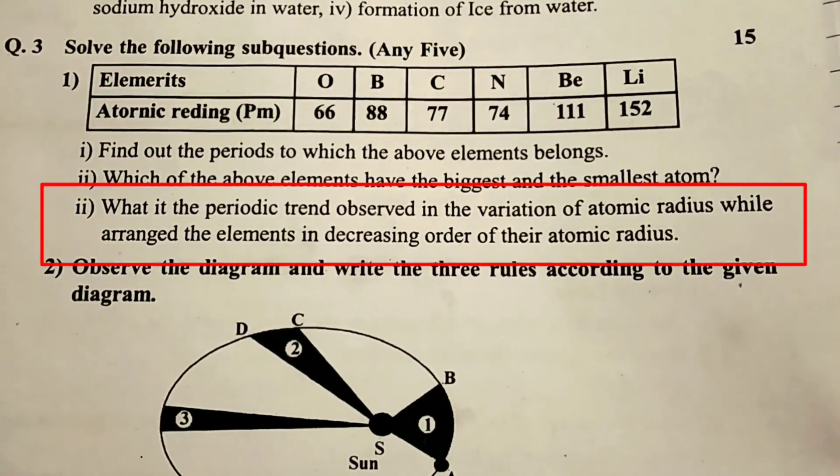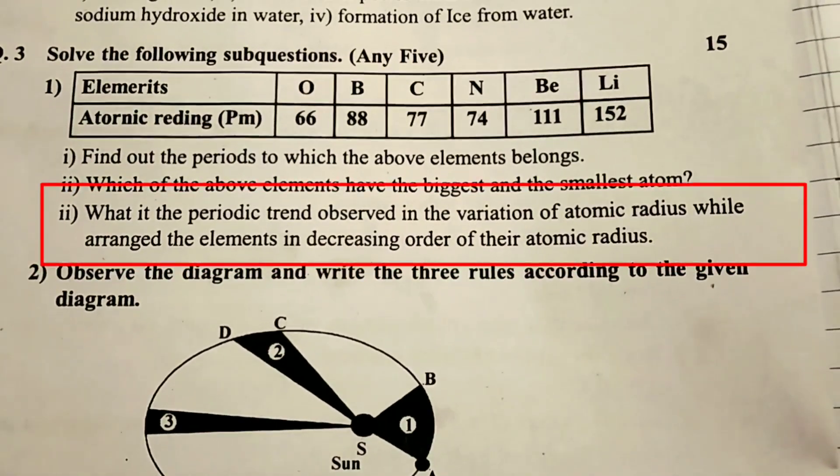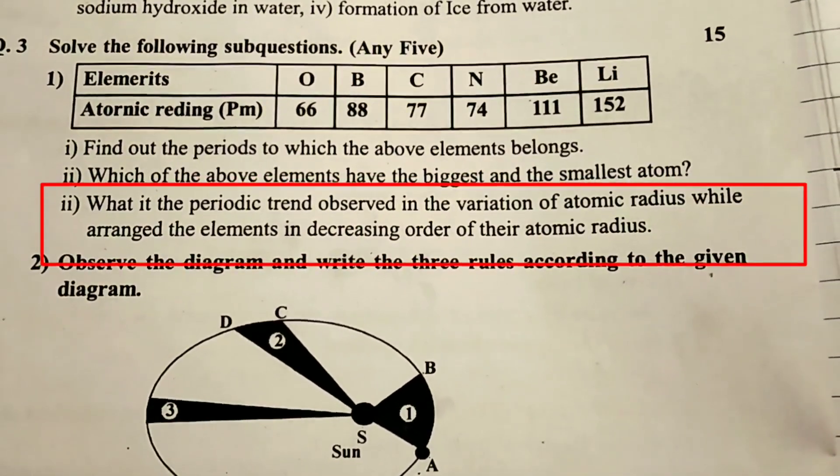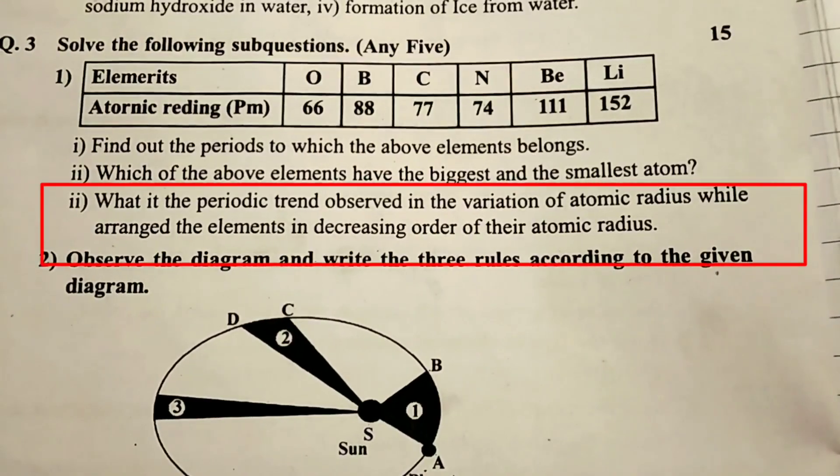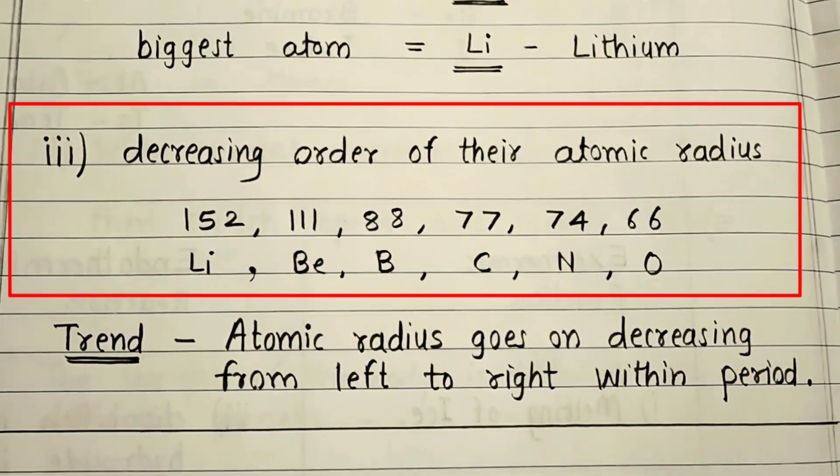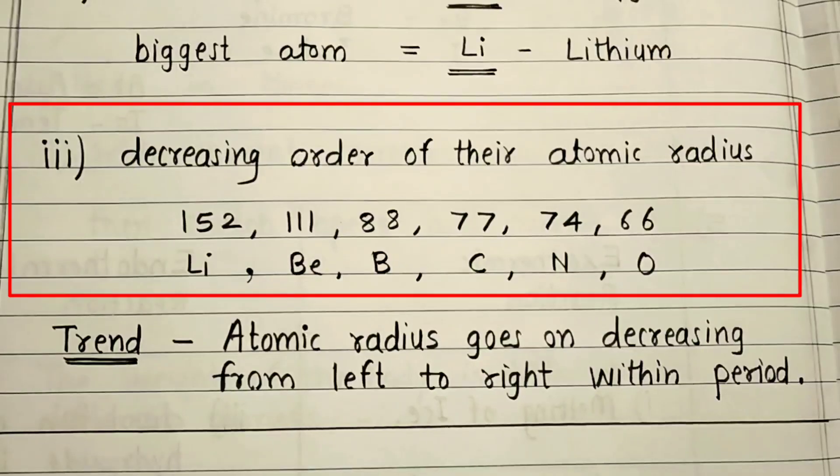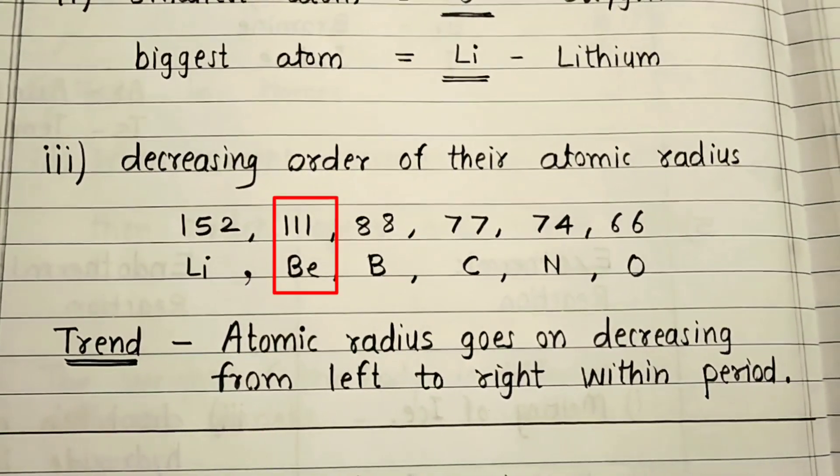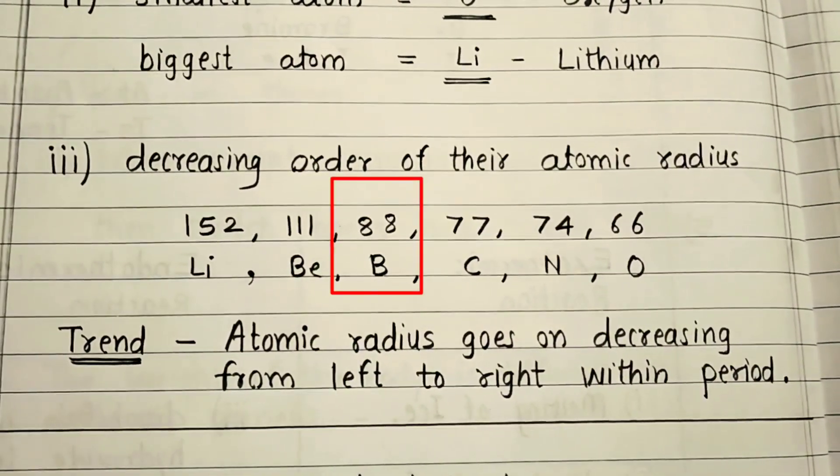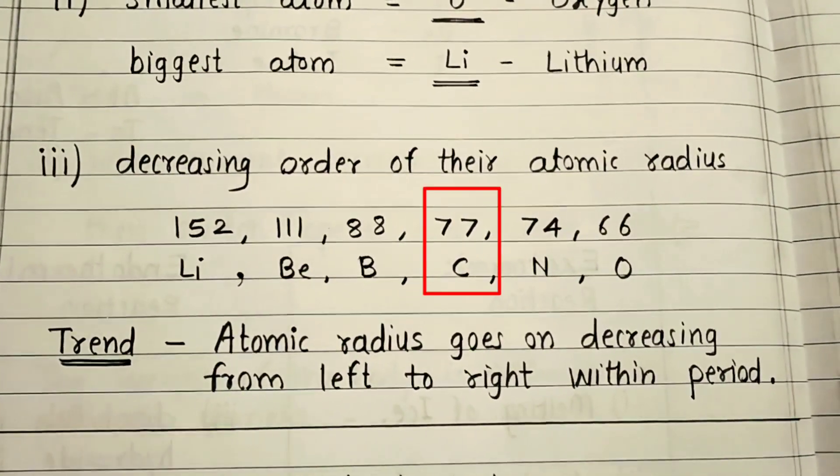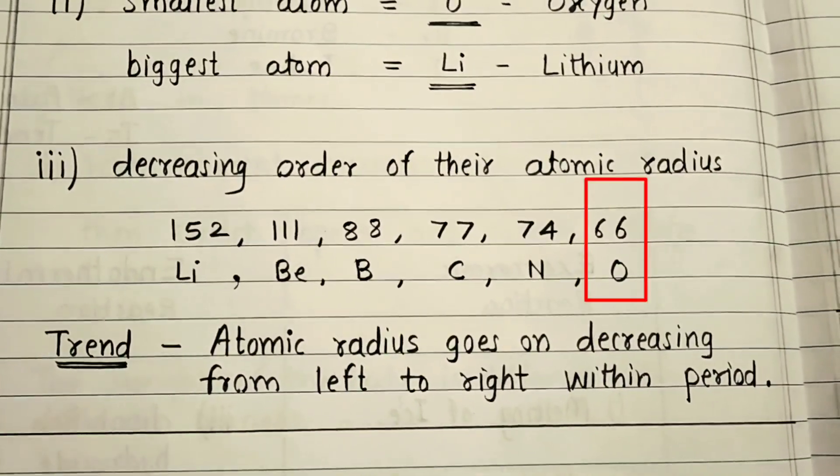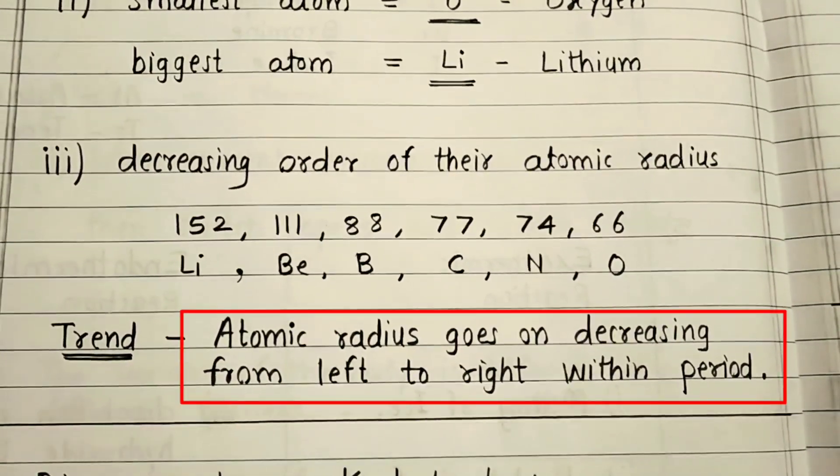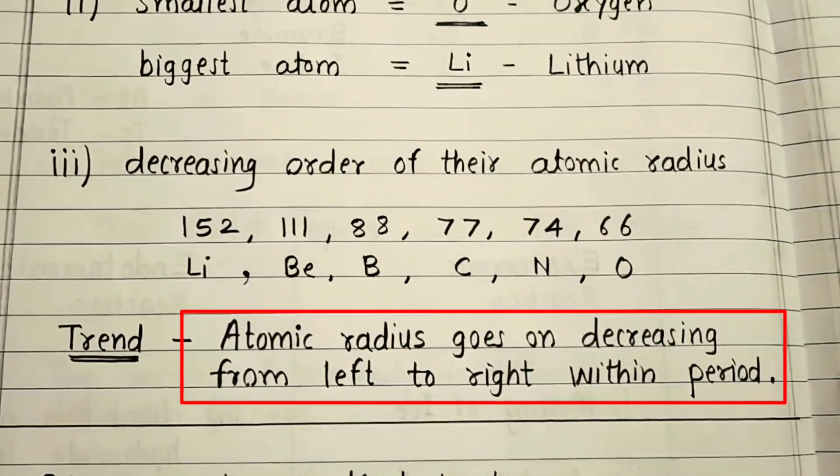Third question: What is the periodic trend observed in the variation of atomic radius while arranged the elements in decreasing order of their atomic radius? 152 Li Lithium, 111 Beryllium, 88 B Boron, 77 C Carbon, 74 N Nitrogen, 66 O Oxygen. Trend: Atomic radius goes on decreasing from left to right within a period.